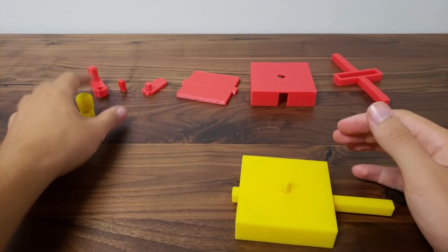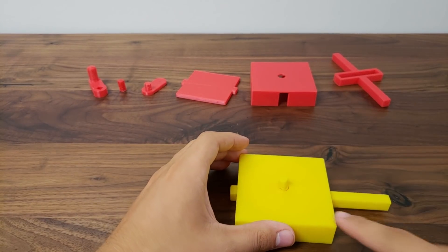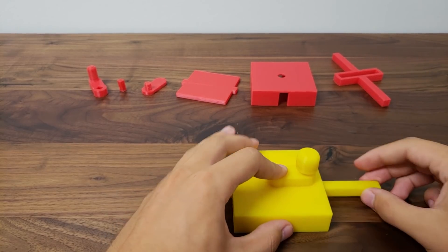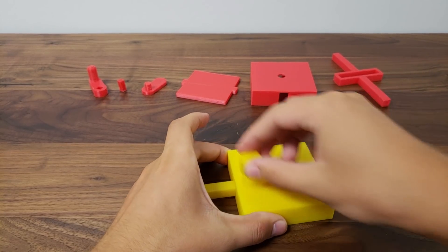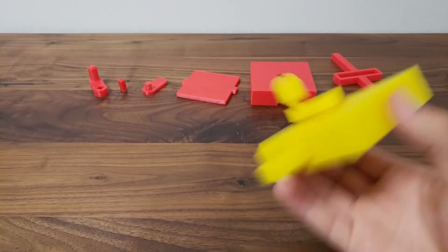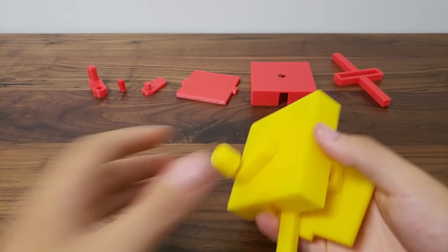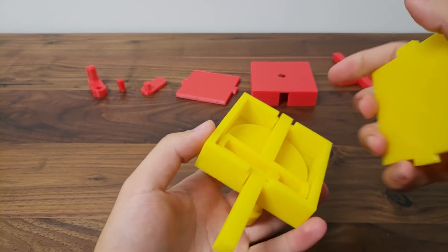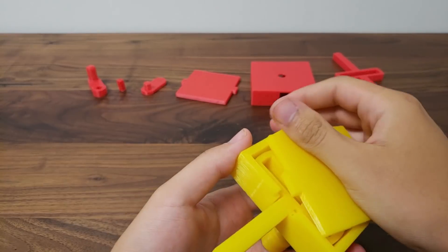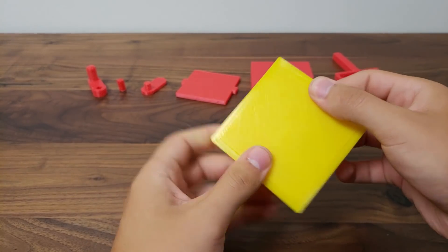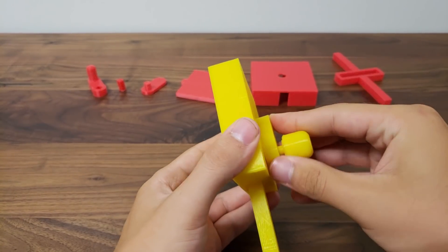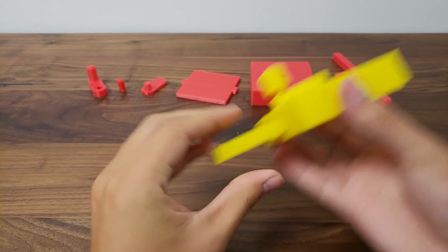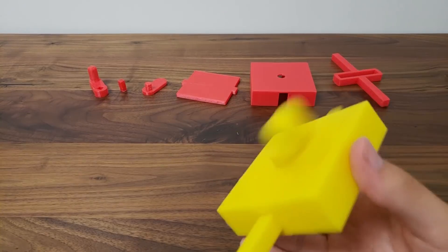Then you attach the handle. I try to line the handle up so it's going the same way as that. It spins nicely. And sometimes it falls apart. And you do the shape.